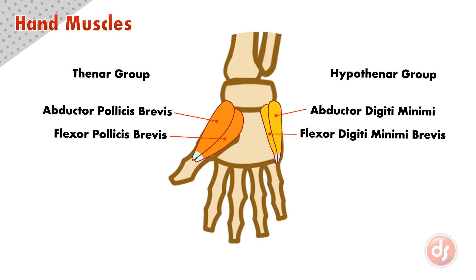This can look overwhelming, especially with such complicated names, but it's actually less difficult than it appears. On either side of the hand there is an abductor muscle, and just to the inside of each abductor is a flexor muscle. One side is dedicated to the thumb, or pollicis in Latin, and the other side is dedicated to the little finger, digiti minimi.